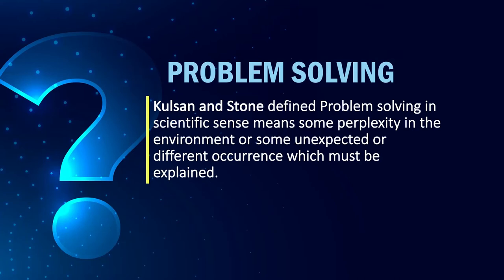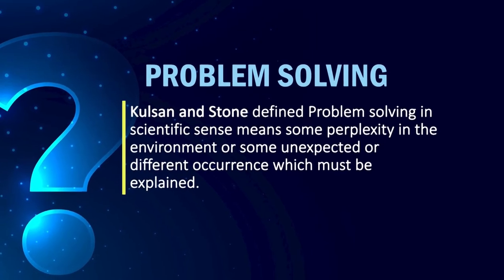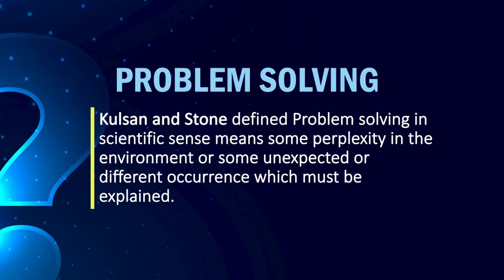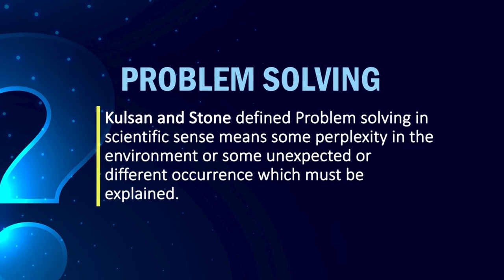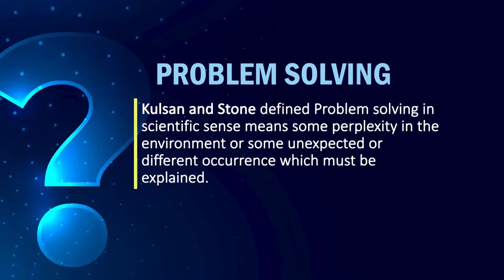Coulson and Stone define problem-solving in a scientific sense as some perplexity in the environment, or some unexpected or different occurrence which must be explained. Learners who use the problem-solving approach, according to Coulson and Stone, look at the differences or the unexpected parts in the environment and then try to find out how it is happening.